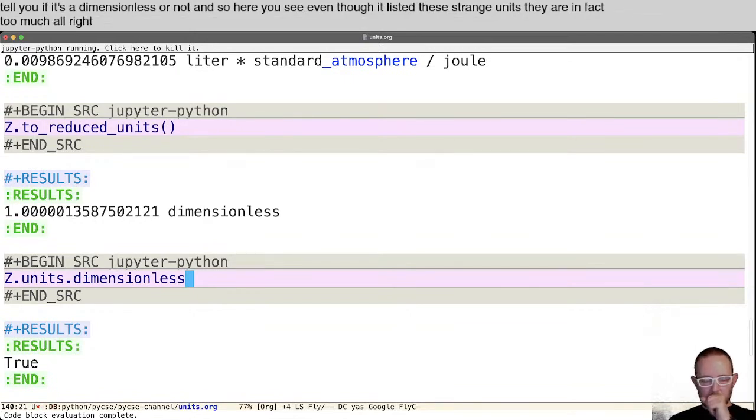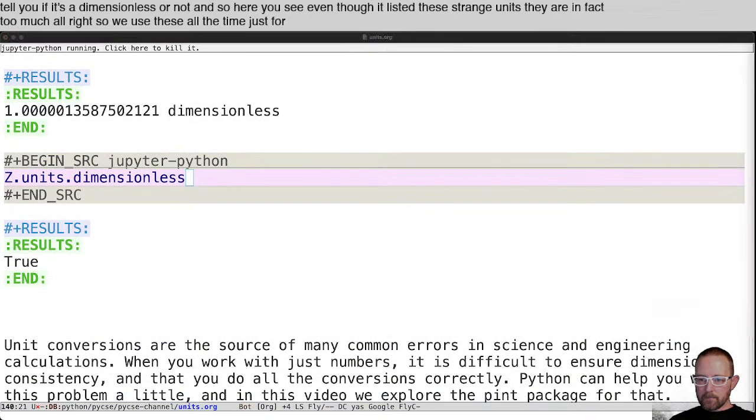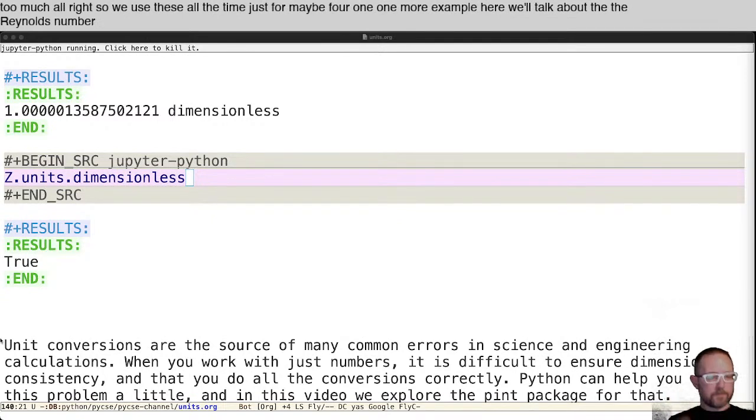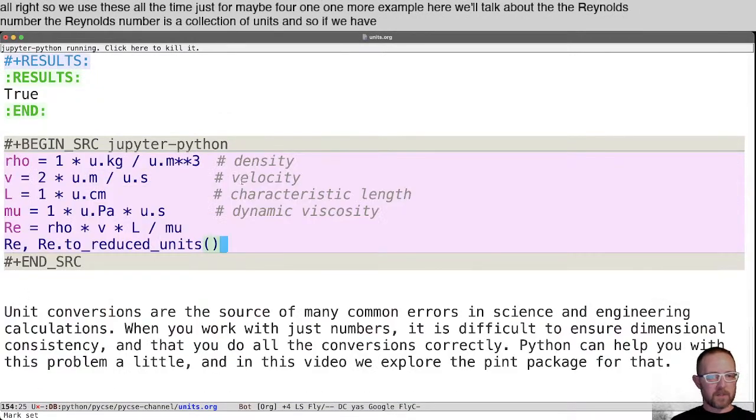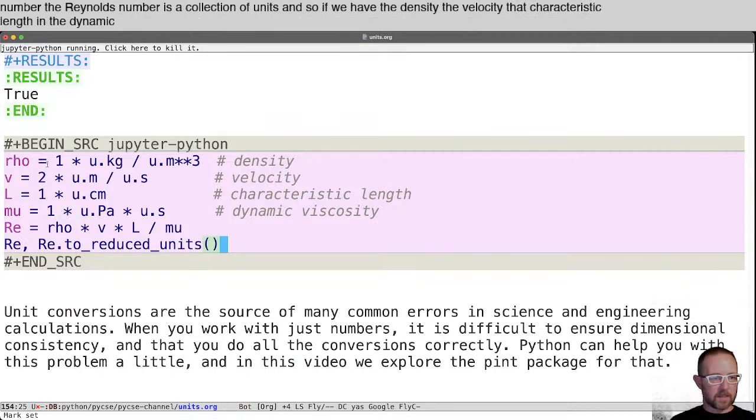All right. So we use these all the time just for maybe for one more example here, we'll talk about the Reynolds number. The Reynolds number is a collection of units. And so if we have the density, the velocity, the characteristic length, and the dynamic viscosity defined here with all of the units on them, this Reynolds number is a known dimensionless quantity. And when we calculate it, we should be able to see that it is.